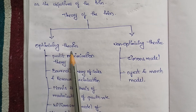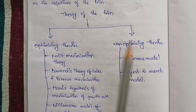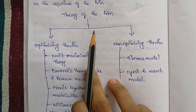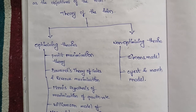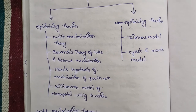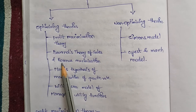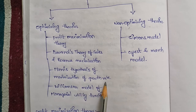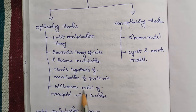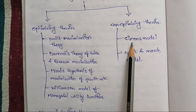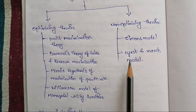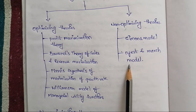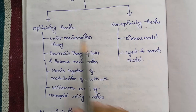The theory of the firm is divided into two types: optimization theory and non-optimization theory. Under optimization theory we have: profit maximization theory, Baumol's theory of sales and revenue maximization, Marris's hypothesis of maximization of growth rate, and Williamson's model of managerial utility function. Under non-optimization theory we have: Simon's model and Cyert and March model.